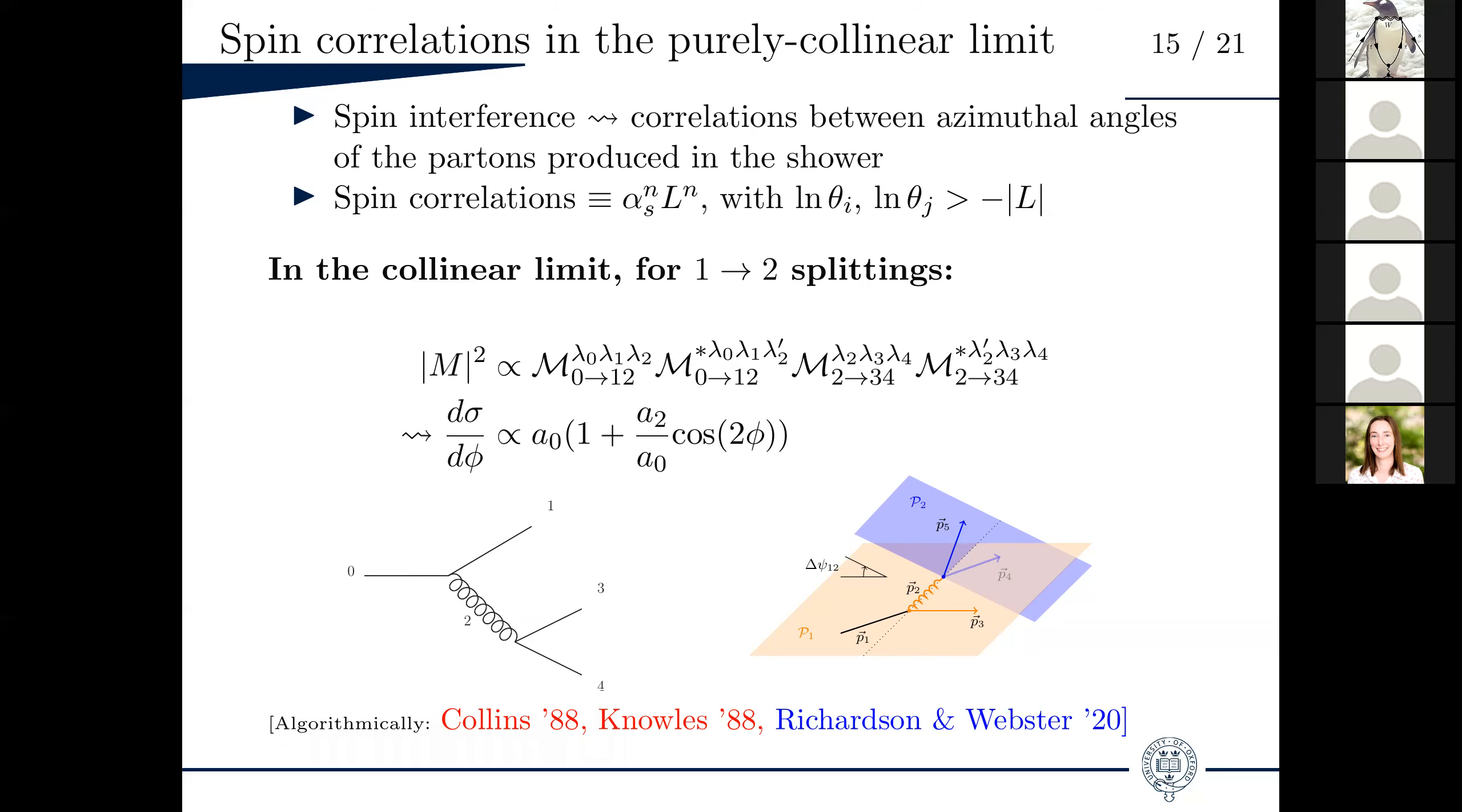Again, typically Parton showers use helicity averaged splitting functions. So the spin information is simply not propagated. But of course, one doesn't want to redo all these spin contractions at every point of the shower, every time a particle is emitted. But as shown by Collins and I think by Knowles long, long ago, one can devise a simple algorithm that reintroduces the correct azimuthal dependence in a limited number of operations. I won't go into the details of the algorithm and how we implemented them, but I'm happy to discuss as well during questions.